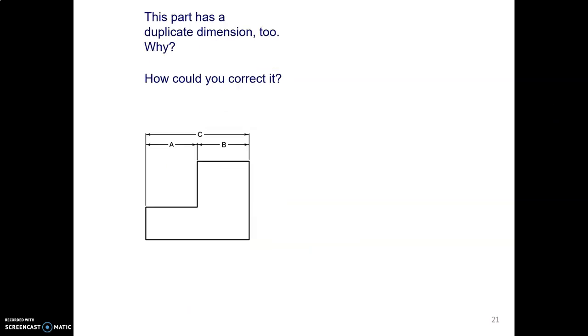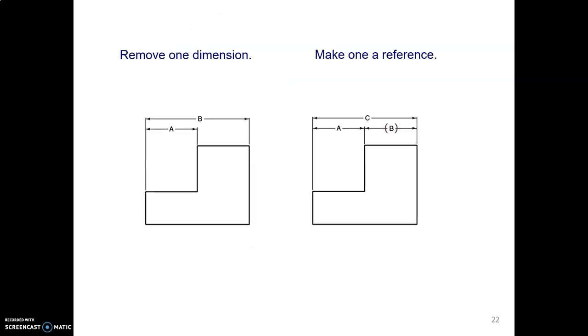This part also has a duplicate dimension. How could you fix it? Well, you could remove one dimension, or if you wanted to leave them all there, you could make one of them a reference by putting in parentheses.